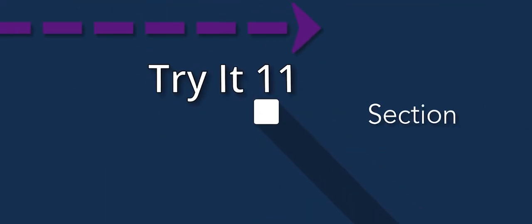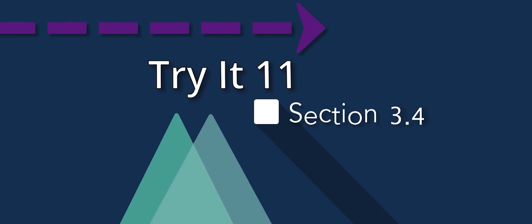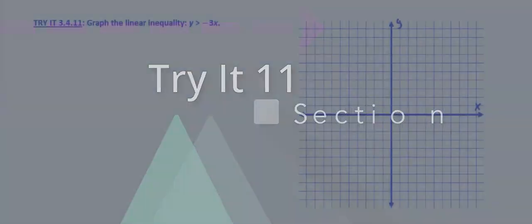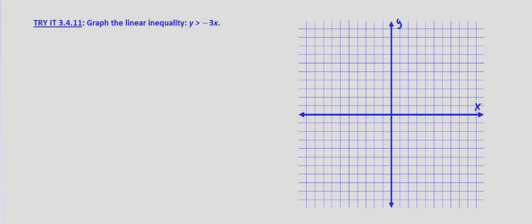In this tried exercise, we are asked to graph the linear inequality y is greater than negative 3x. The process is essentially the same. The difference with this inequality, or the inequalities that we're looking at in this particular section and the previous ones, is that the y-intercept is 0.